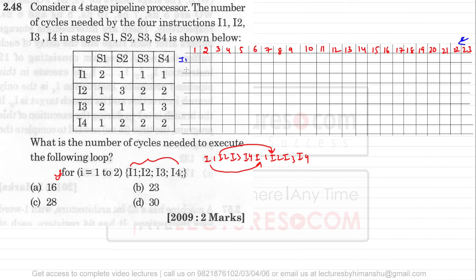We'll be executing instructions in order: I1, I2, I3, I4, then again I1, I2, I3, I4. Instruction I1 takes two clock cycles in stage S1, so it occupies S1 for clock cycles 1 and 2. Only then can it move to stage S2, so I1 enters S2 at the third clock cycle.